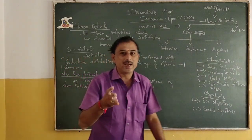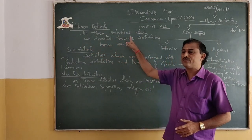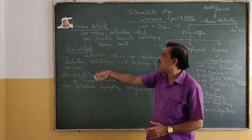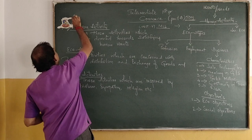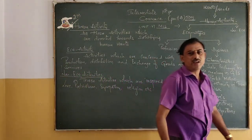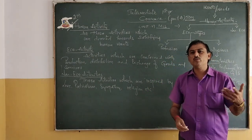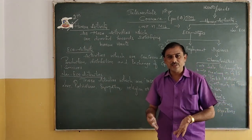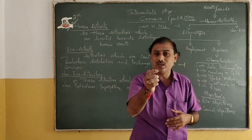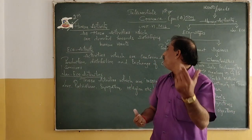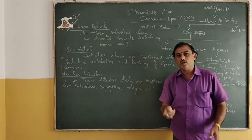So all those activities which are directed towards satisfying human wants — we call this as a human activity. Human activity is nothing but all those activities which are directed towards satisfying human wants. This will be important for your two-mark questions. If someone asks what is human activity — human activities means nothing but all those activities which you undertake or which you direct towards satisfying your basic needs or basic wants.